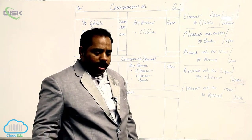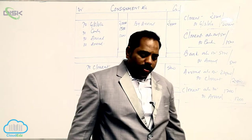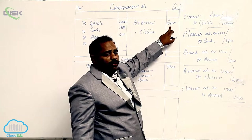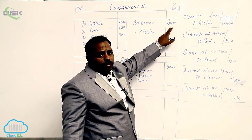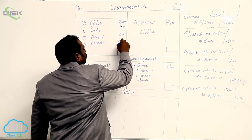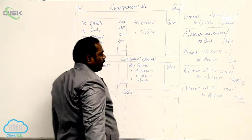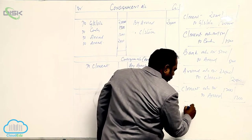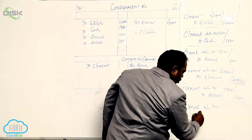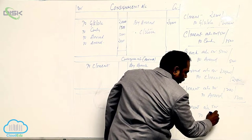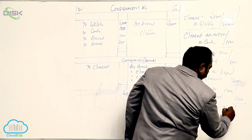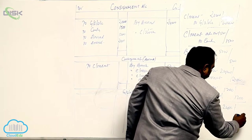Commission is 10% on sales. Total sales are 24,000, so 10% comes to 2,400. That is also an expense on the debit side. The entry is Consignment Account debit, to Consignee — Arvind — for 2,400.